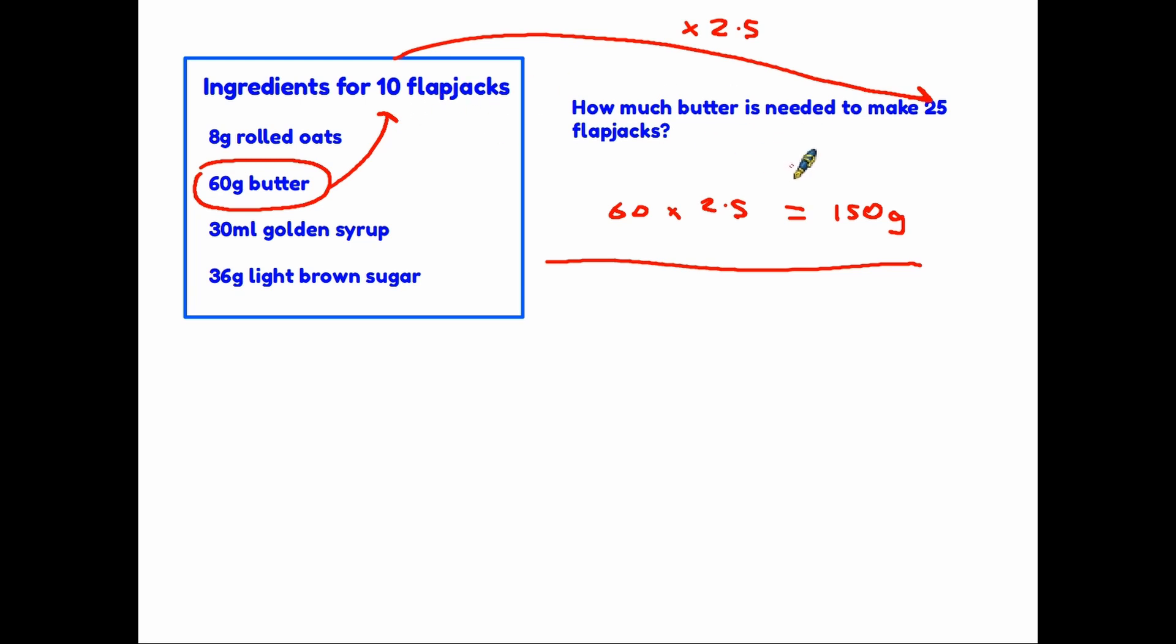However, if the numbers were slightly more complicated, or you just didn't see that relationship, then you can use the two-step method. In this case, we would say, okay, we know how much butter for 10 flapjacks: 60 grams. If we take that 60 grams and divide by 10, then that means each flapjack is 6 grams. We then look at how much we need to make 25 flapjacks. Therefore, it's 25 times 6 grams, and again, you get the answer: 150 grams. It really doesn't matter which way you approach this. If you can see straight away a direct relationship, the multiple between the two, you can take it that way. If you can't, then follow the two-step process. Find the amount that you need for one flapjack, and then multiply by 25.